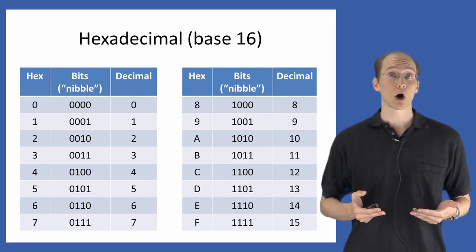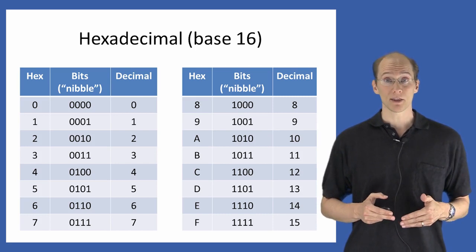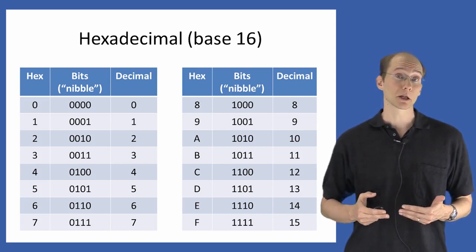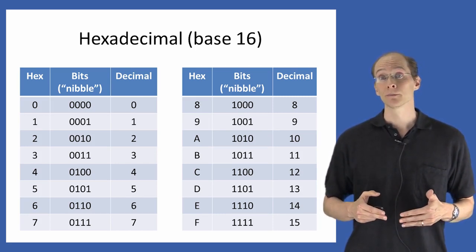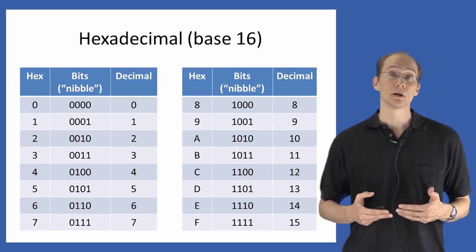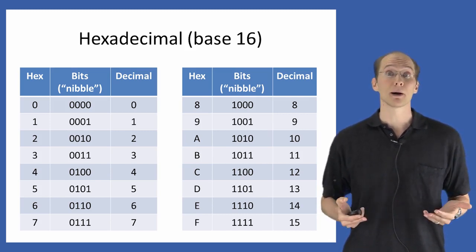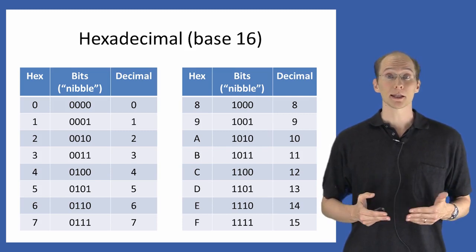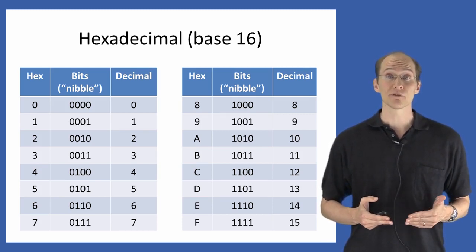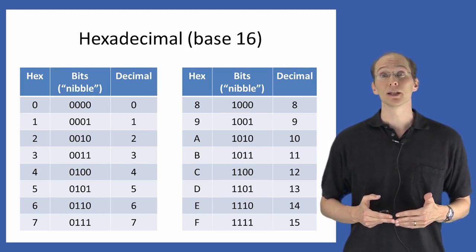Now these correspondences aren't arbitrary. Each hex digit corresponding to a particular nibble corresponds to the value of that nibble if you view it as a binary integer. So just as an example, if we look at the hex digit F, that corresponds to the nibble 1111. And in binary notation,